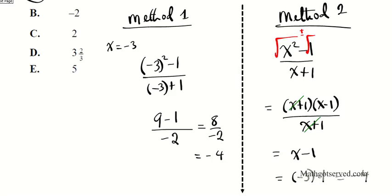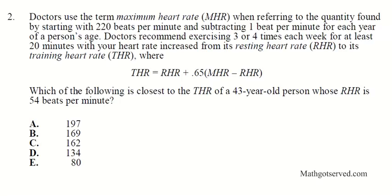Now let's move on to question number 2. It says doctors use the term maximum heart rate when referring to the quantity found by starting with 220 beats per minute and subtracting 1 beat per minute for each year of a person's age. Doctors recommend exercising 3 or 4 times each week for at least 20 minutes with your heart rate increased to its training heart rate, where THR equals the resting heart rate plus 0.65 times the maximum heart rate minus the resting heart rate. We need to find the training heart rate of a 43-year-old person whose resting heart rate is 54 beats per minute.